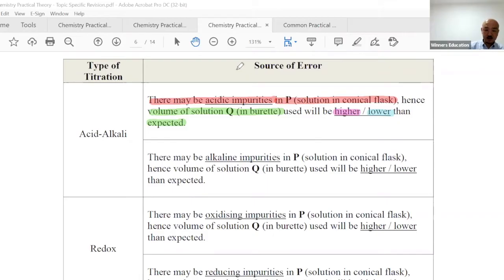Let me explain with examples. Burette reading is higher - instead of 25 cm³, you might get 27, 28, or 29 cm³, much higher than expected. Why? Because the conical flask, besides having the acid you're titrating, has acidic impurities. So the conical flask has the original acid plus other acidic impurities, meaning you obviously need more titrant.